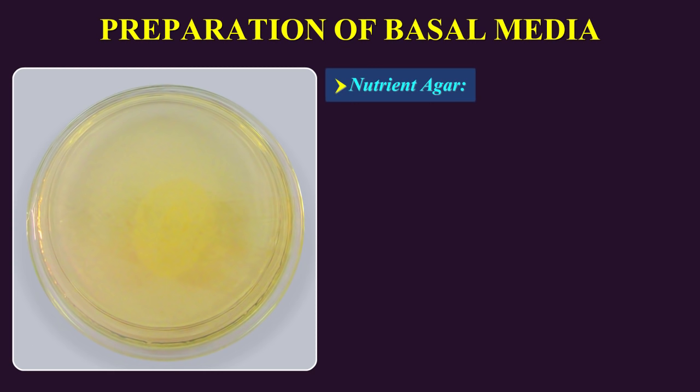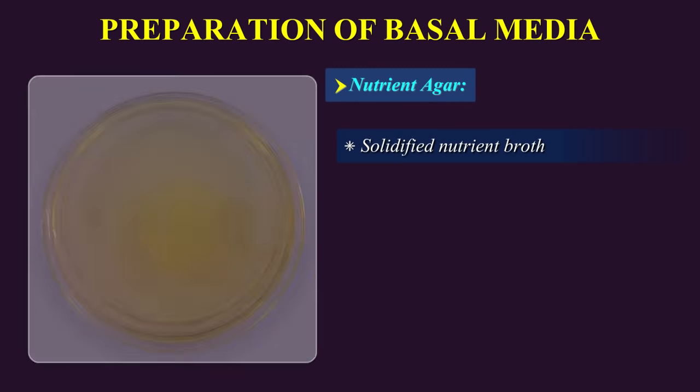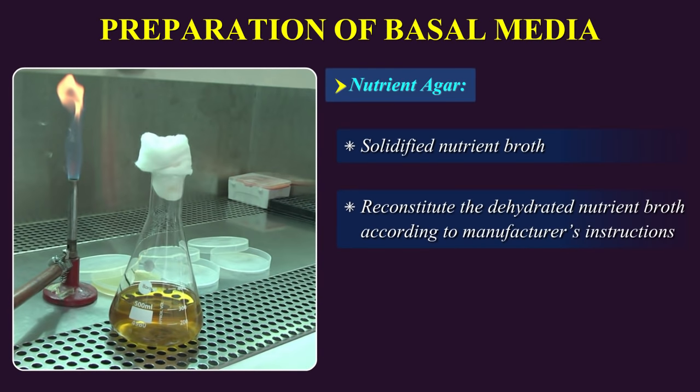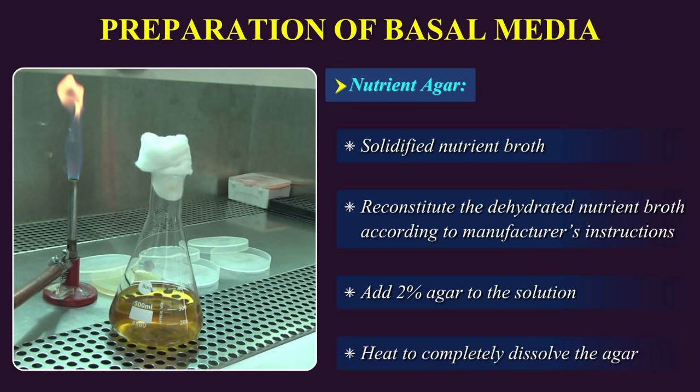Nutrient agar. Nutrient agar is solidified nutrient broth. Reconstitute the dehydrated nutrient broth according to manufacturer's instructions. Add 2% agar to the solution. Heat to completely dissolve the agar without burning it. All the directions for preparation, sterilization, and storage of dehydrated media as mentioned earlier should be adhered to.